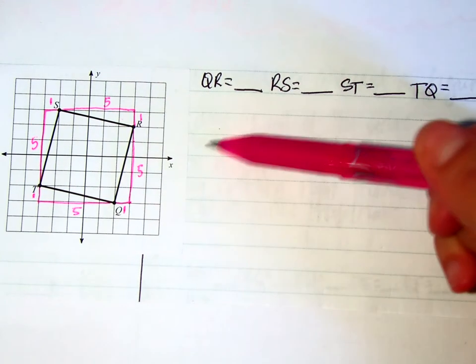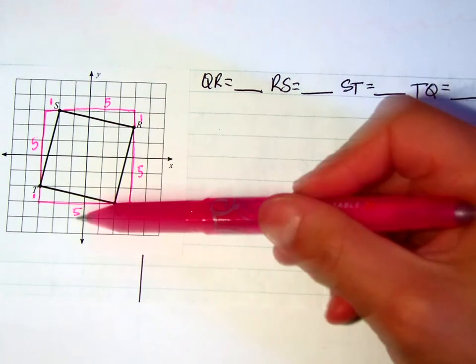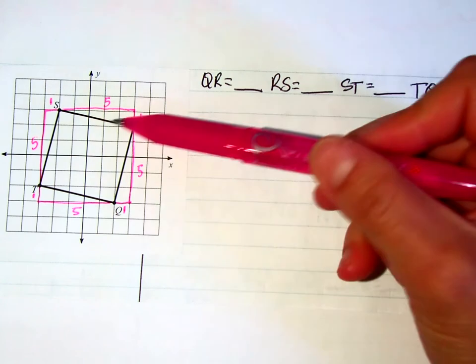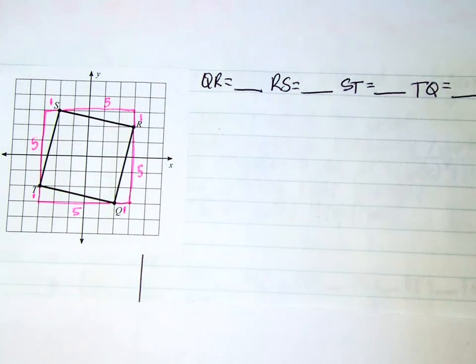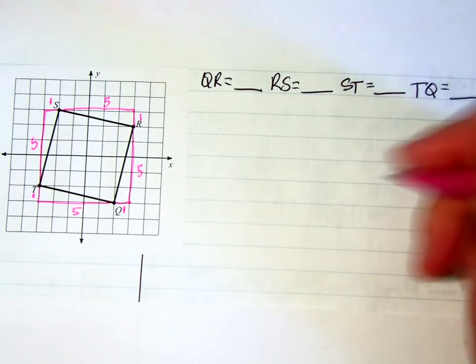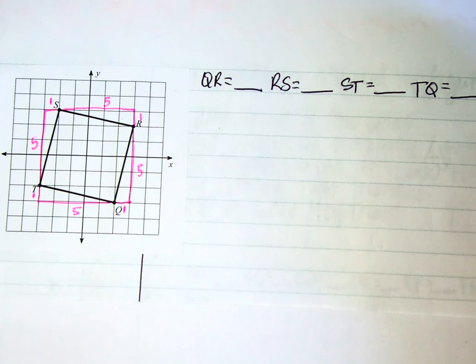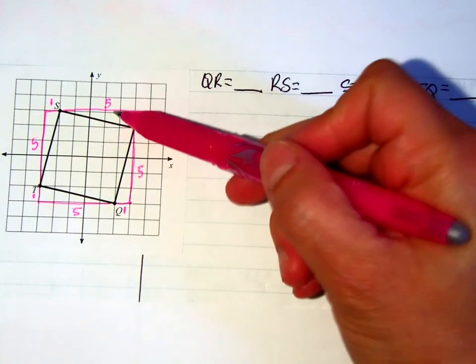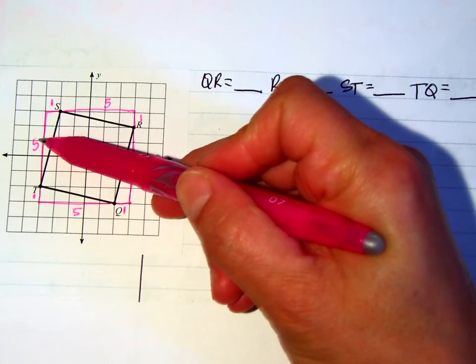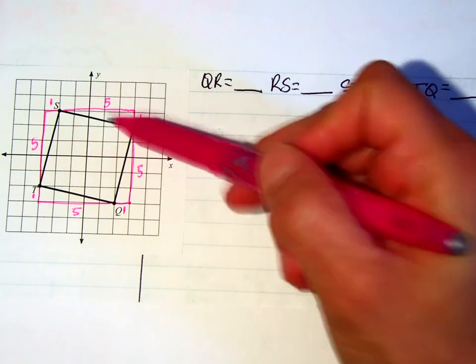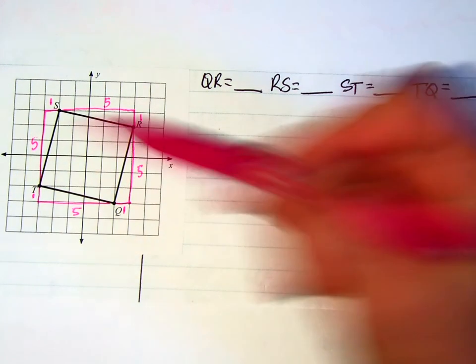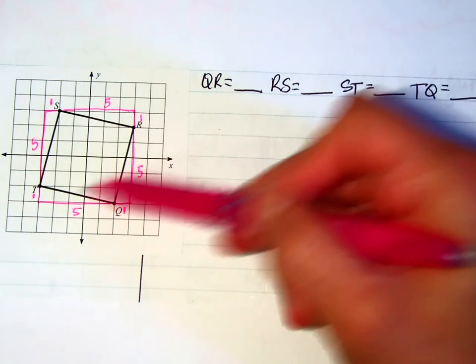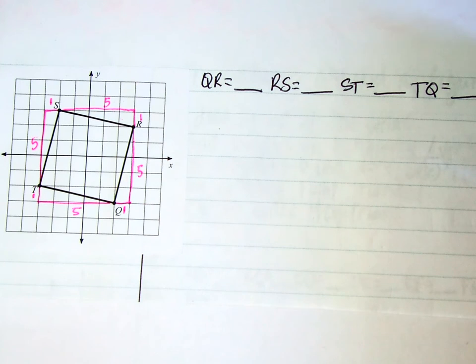So my question is, do I have to do distance formula four times if I have the same triangle every single time? Well, no, that would be very silly, and that would be us wasting a lot of time. So because all of these triangles we've created to find the lengths of the sides are the same, then that's going to mean that all of these sides are going to be the same length. So I only have to do it one time.